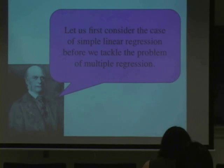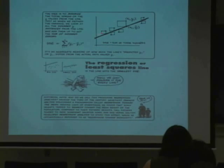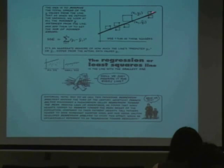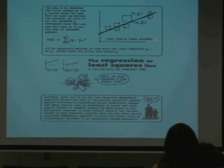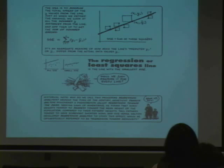As we made our way to talking about multiple regression, we first talked about simple linear regression. So if we had a scatter plot like this, we could draw a best-fit line — a regression line — through that. What we're trying to do with this scatter plot is predict a Y value from an X value, finding the line that best fits and minimizes the squared deviations in the Y value. That's the best-fit line, the regression line, also called the least squares line.